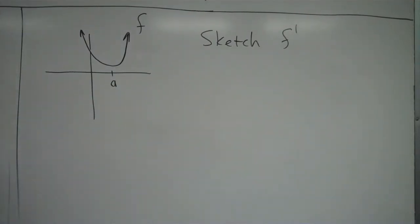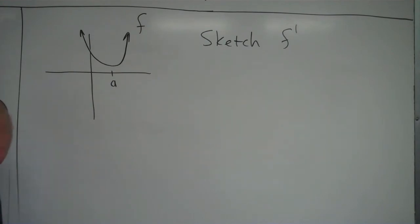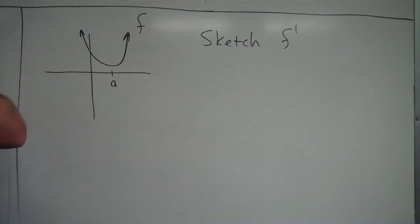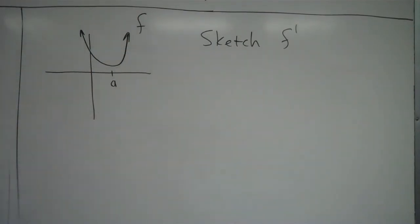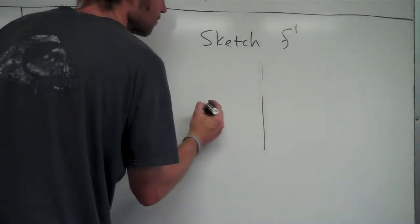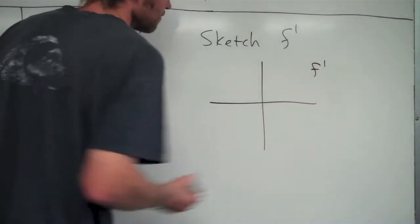We've been talking about finding derivatives, but I want to make sure it's clear on the relationship between the graph of f and the graph of f prime. What I've got right here is a sketched graph of f, and from that, I want us to be able to sketch what the f prime graph looks like. So I'll put a little axes here for f prime — this will be my f prime graph right here.